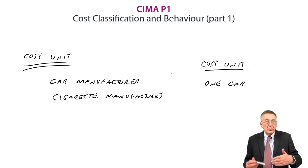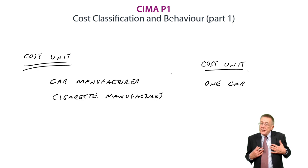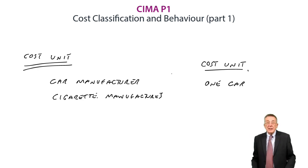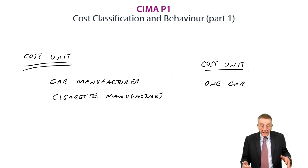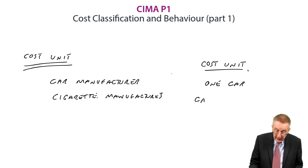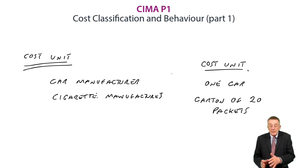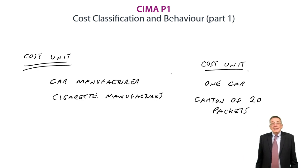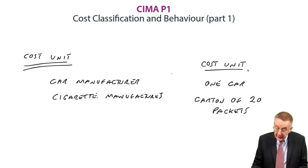There's no rule. In the exam they might say: what's the most appropriate cost unit? But it's up to us to decide. If I'm the cigarette manufacturer, we'd have to sit down and say, what is it that we're going to cost out? I'm suggesting a carton of 20 packets. There isn't a rule, but it's not always immediately obvious — we need to think it through.